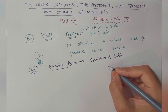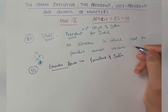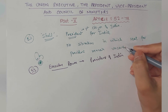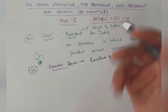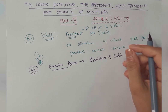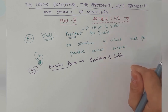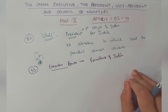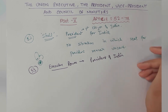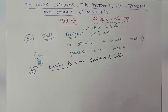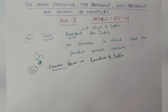Article 54 talks about who can vote in the President's election. Articles 54 and 55 talk about the procedure and manner of election, including proportional representation and single transferable vote. Article 56 talks about the term of the President, Article 57 covers re-election, and Article 58 talks about qualifications of the President. In this video we are going to talk about the President's appointment, retirement, re-election, and qualifications.